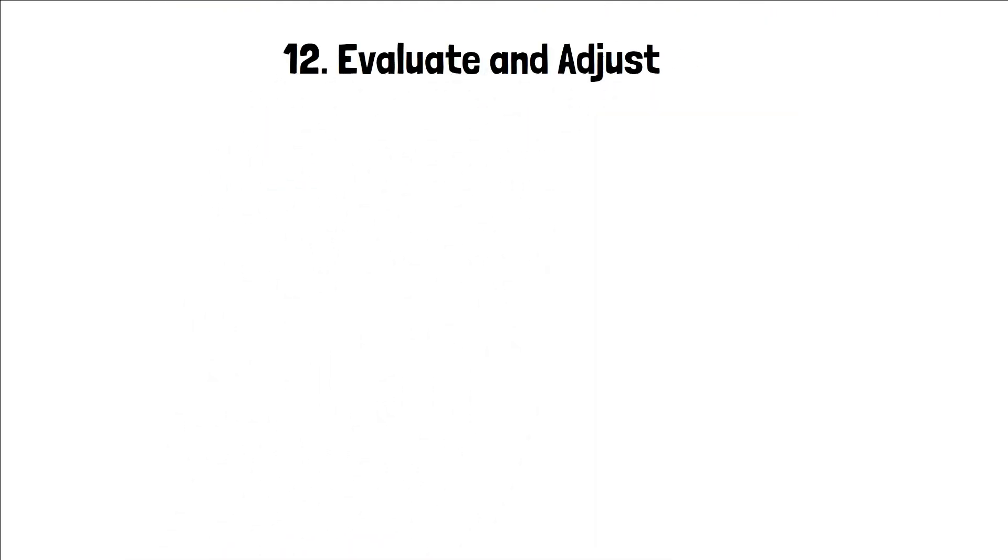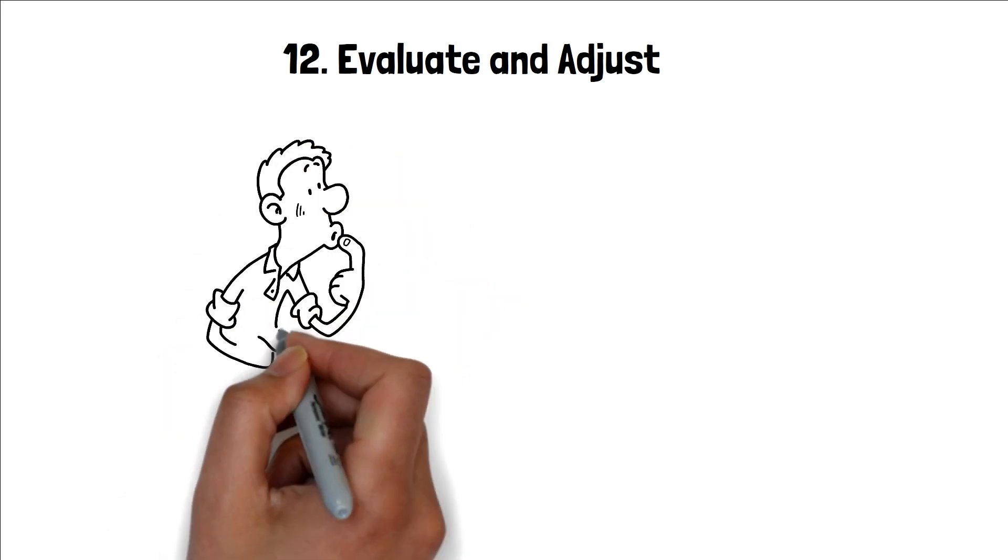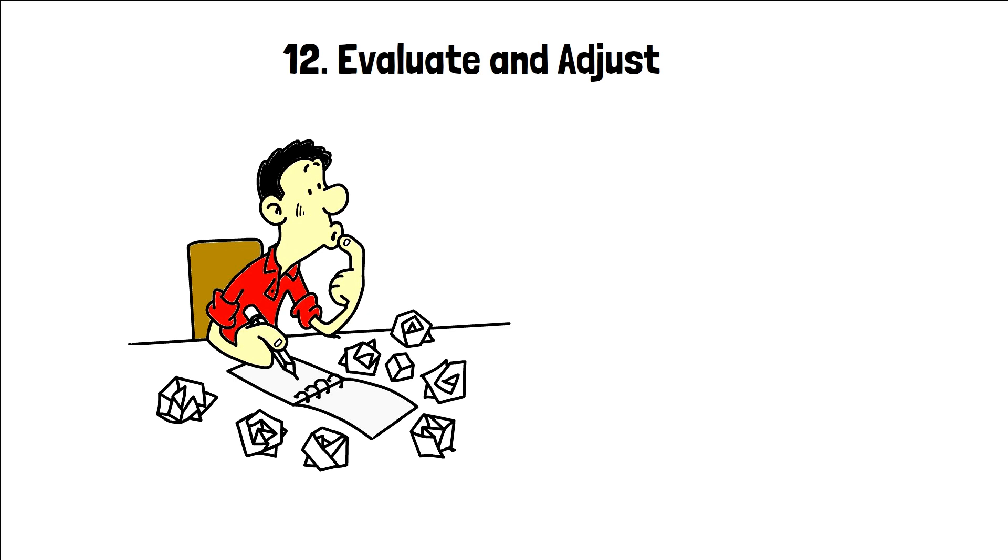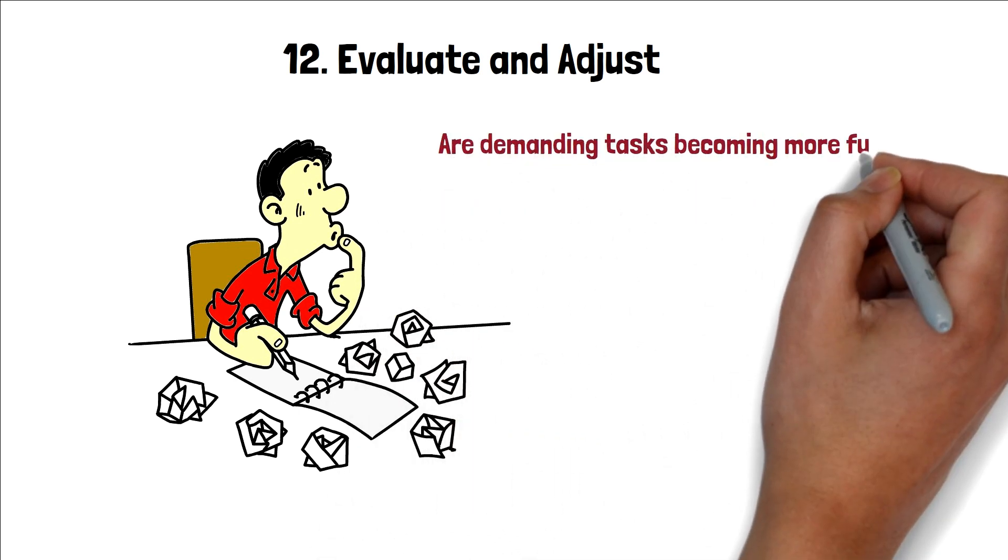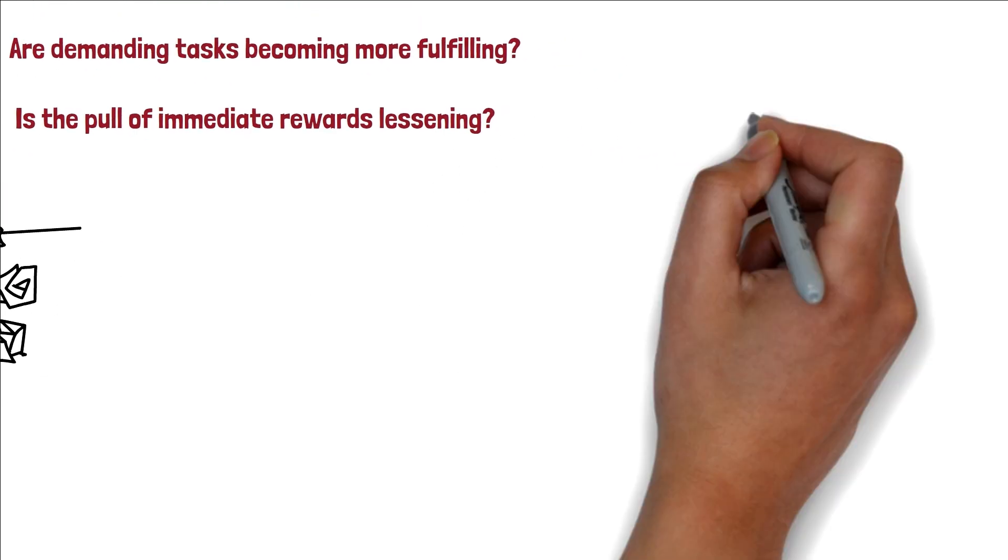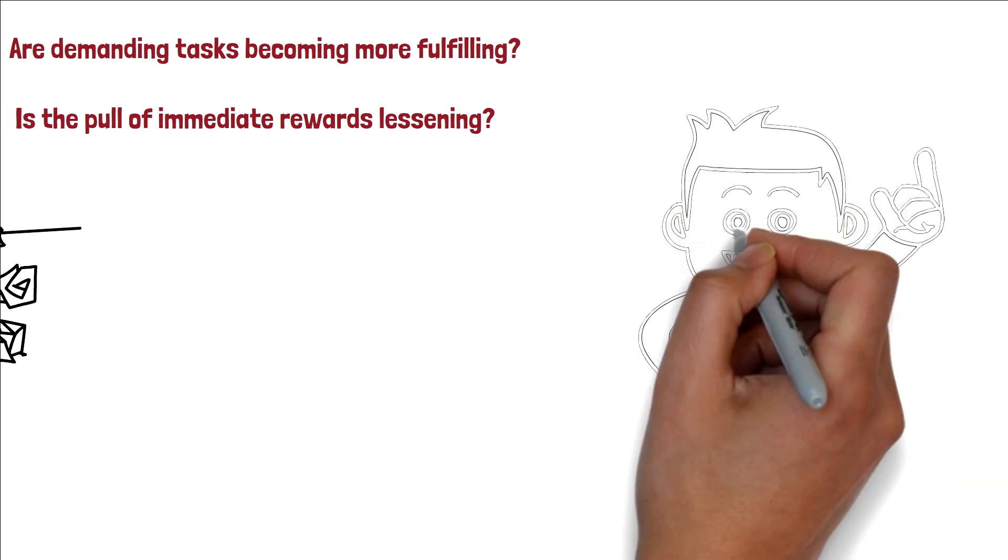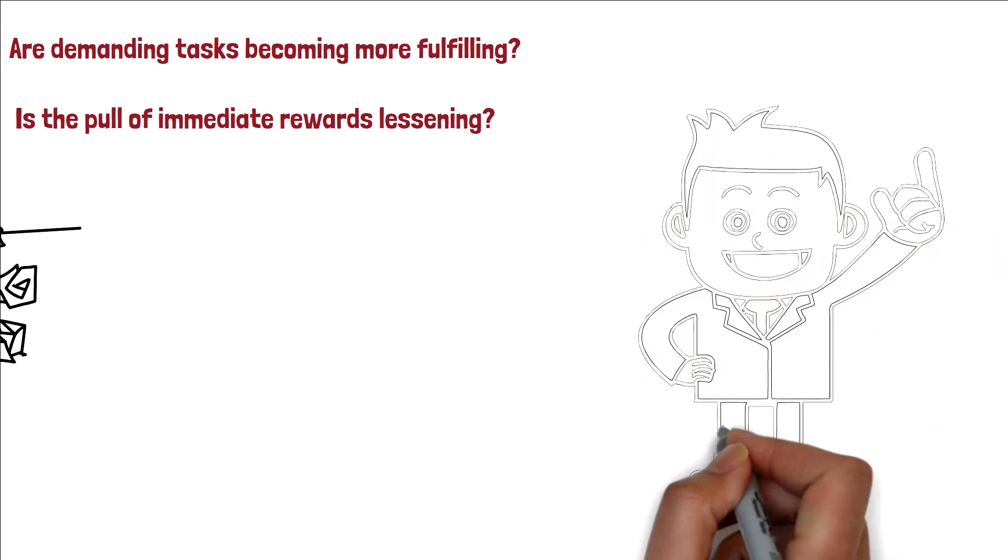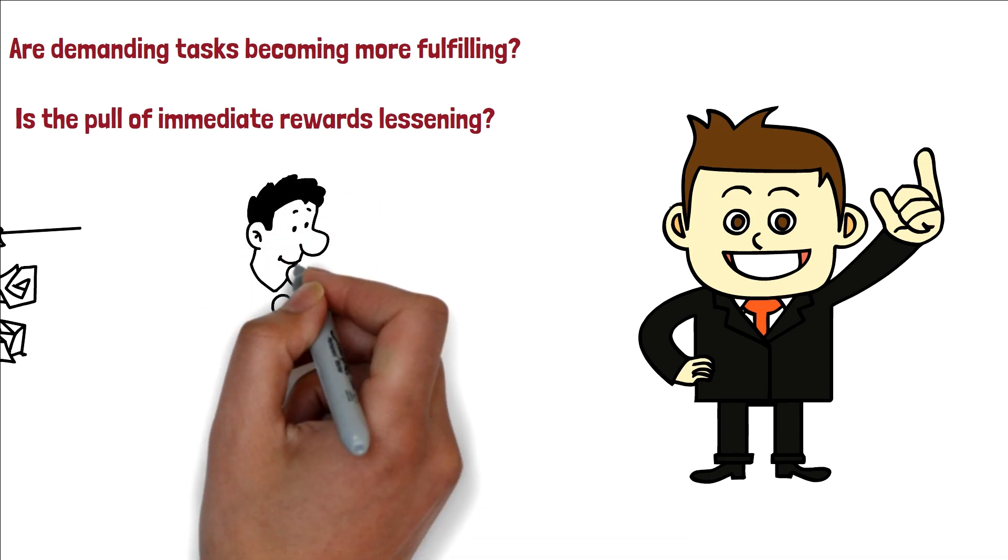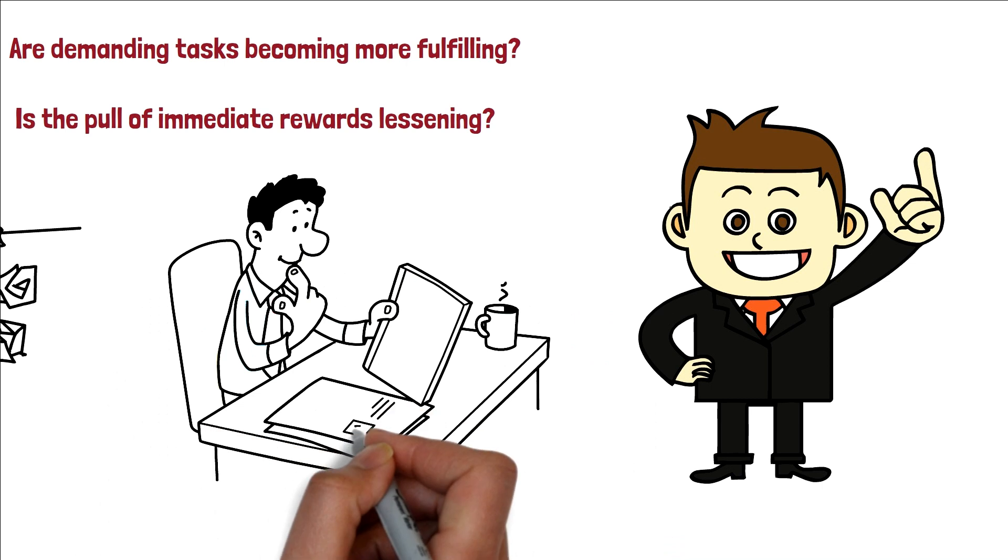12. Evaluate and adjust. As you continue your journey after the dopamine detox, it's crucial to take moments for introspection. Ask yourself, are demanding tasks becoming more fulfilling? Is the pull of immediate rewards lessening? Based on these reflections, fine-tune your strategies, ensuring they align with your evolving needs and goals. Such regular check-ins not only keep you grounded, but also allow for dynamic adaptation to ensure sustained success in your detox journey.